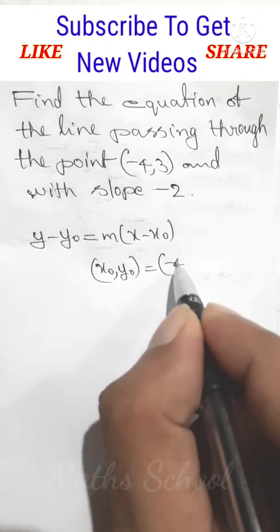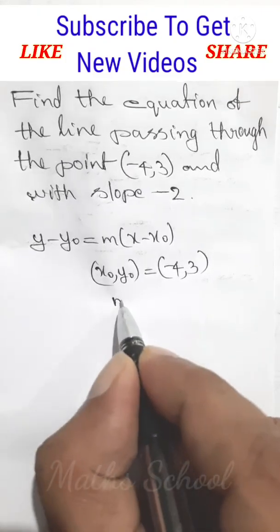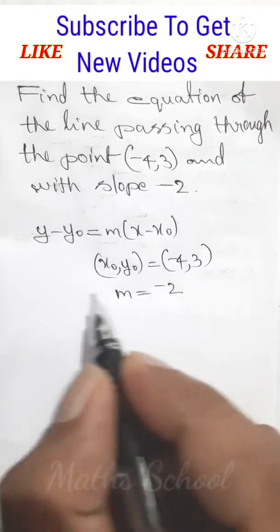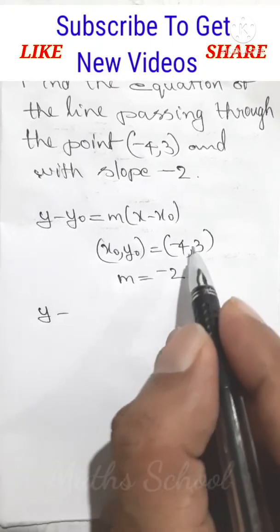x0, y0 is equal to (-4, 3), m slope, m is equal to -2.